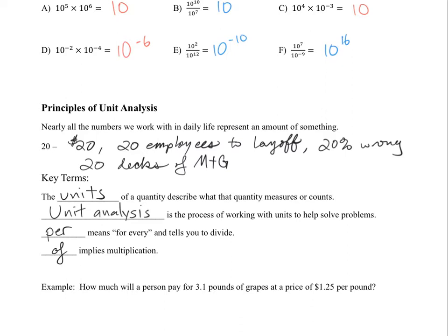So let's take a look at this first example here really quickly. How much will a person pay for 3.1 pounds of grapes at a price of $1.25 per pound? So the word we want to focus on right here is per. So the units here will look something like this. $1.25, 1.25, and I'm going to use the word dollars here instead of using the symbol, just so you can see how the unit analysis will work. Per means divide pound.